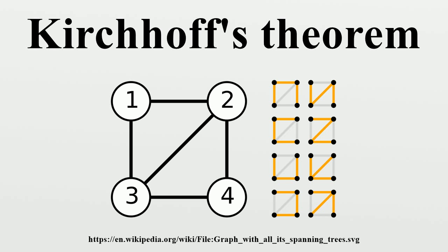Cayley's formula follows from Kirchhoff's theorem as a special case, since every vector with 1 in one place, minus 1 in another place, and 0 elsewhere is an eigenvector of the Laplacian matrix of the complete graph, with the corresponding eigenvalue being n. These vectors together span a space of dimension n minus 1, so there are no other non-zero eigenvalues. As Cayley's formula counts the number of distinct labeled trees of a complete graph, we compute any cofactor of the Laplacian matrix of K_n, yielding n^(n minus 2), which is Cayley's formula.